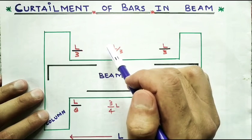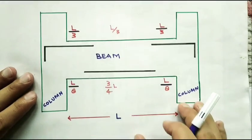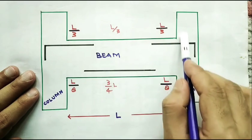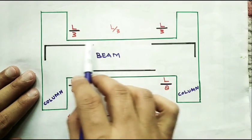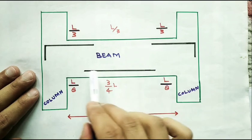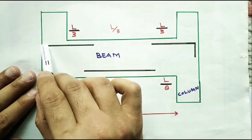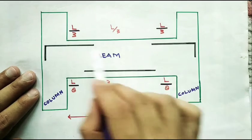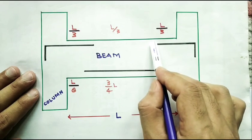Simply supported beam. First of all we need to understand this figure. This is my beam. This beam has two columns under it. This is the length of the beam. Now we call the top zone the compression zone, and we call the bottom zone the tensile zone. What we have done is cut the bar at L by 3 length on this side and L by 3 length on the other side.